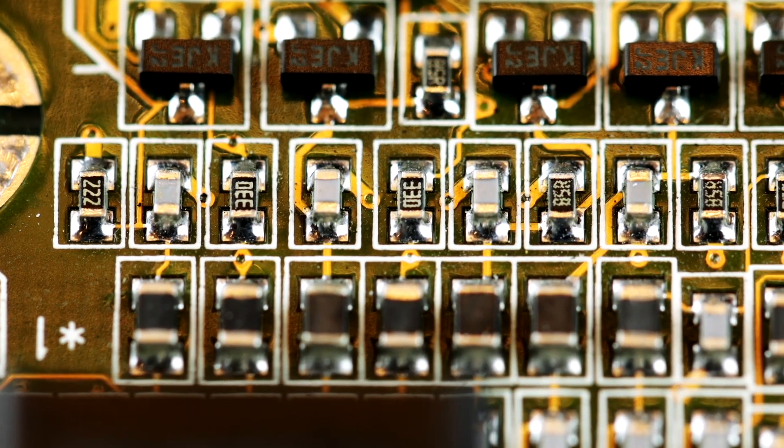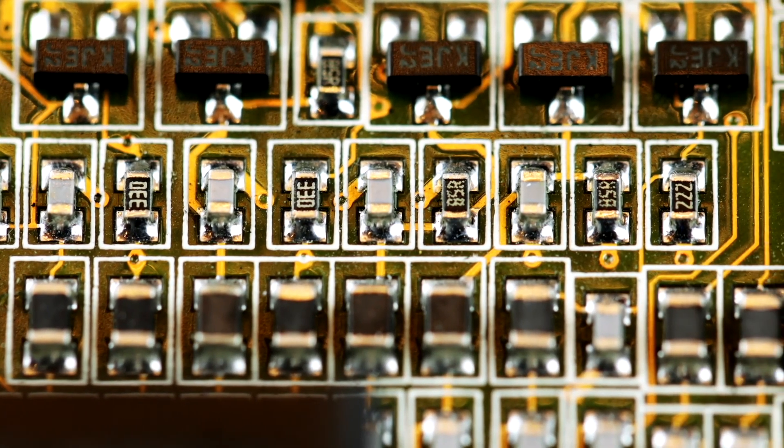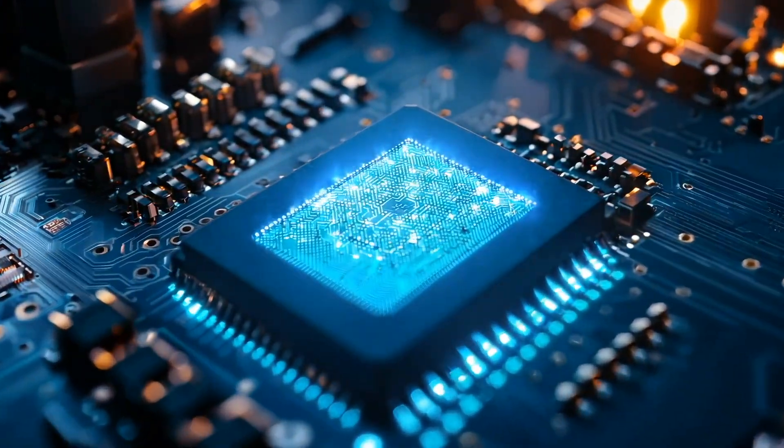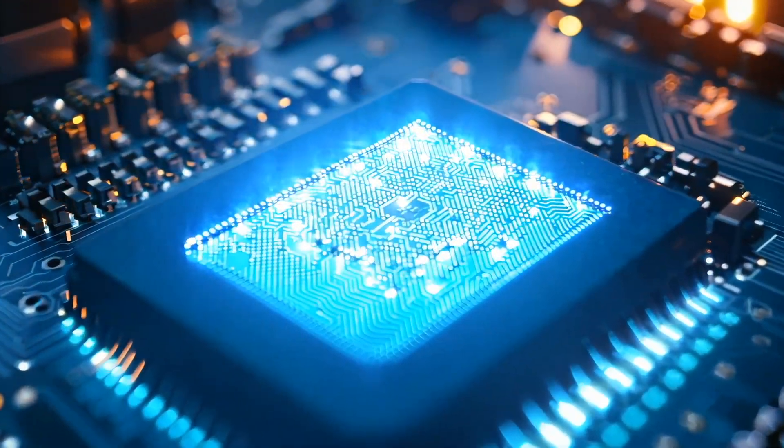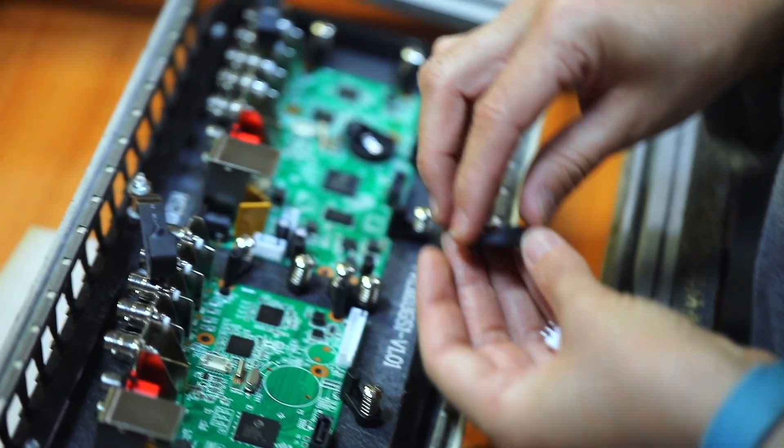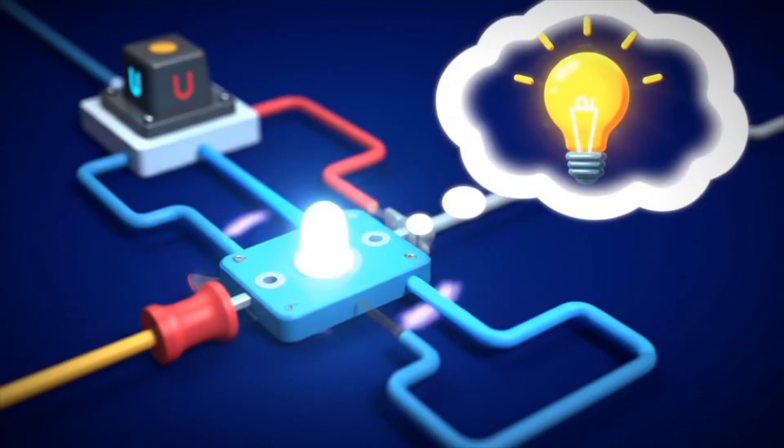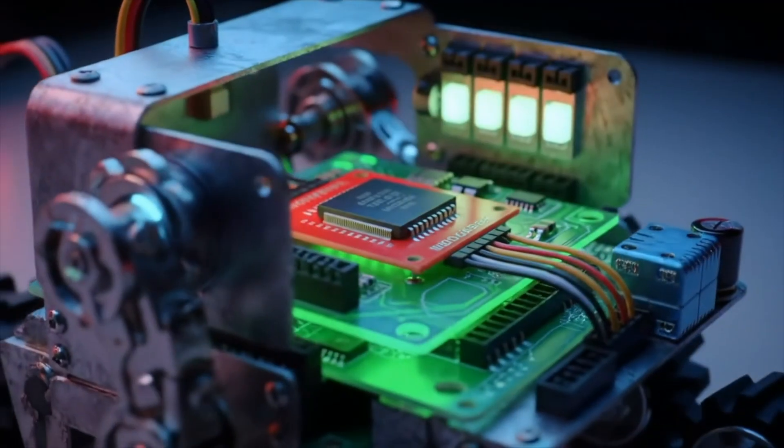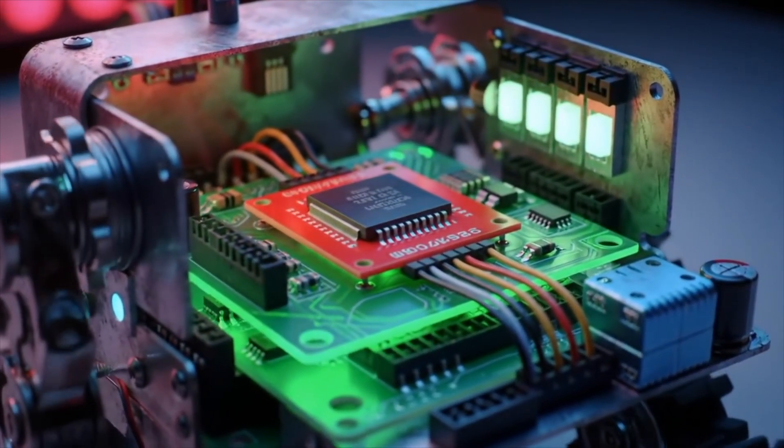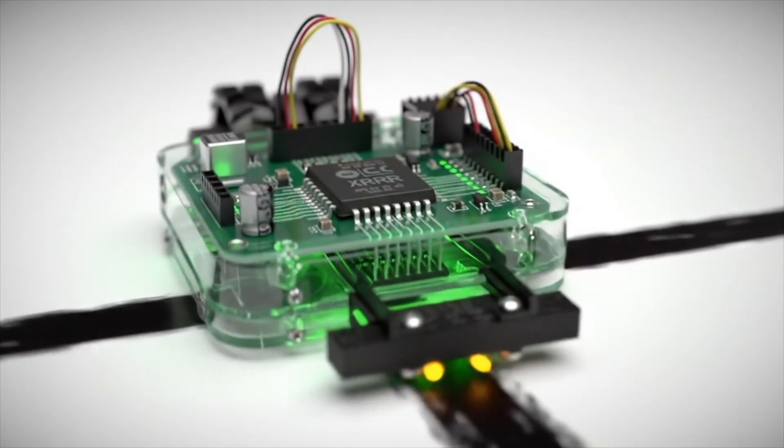Most importantly, you'll need to understand transistors. Transistors are the building blocks of modern electronics. Think of them as tiny electronic switches that can either amplify a signal or switch a circuit on and off. You'll use them to control larger currents with a small voltage from your microcontroller, like a brain telling a muscle to move.